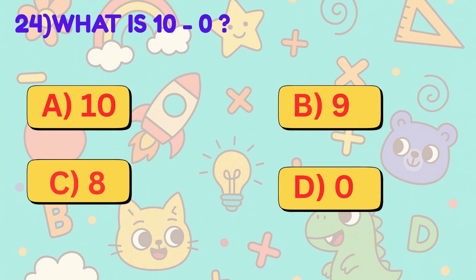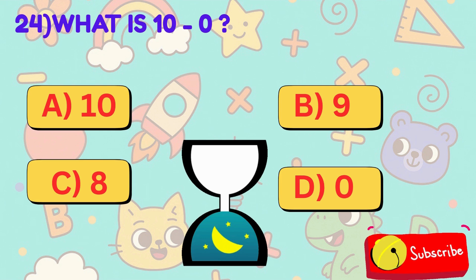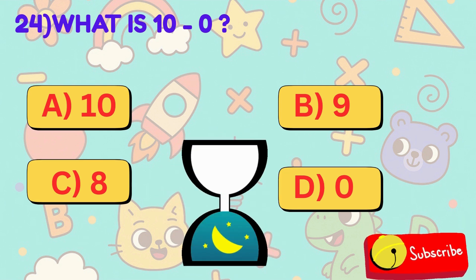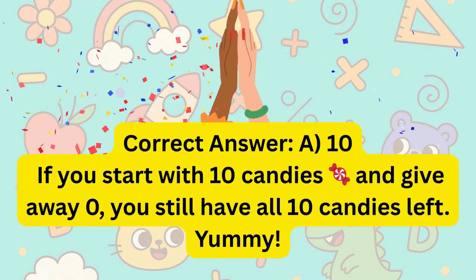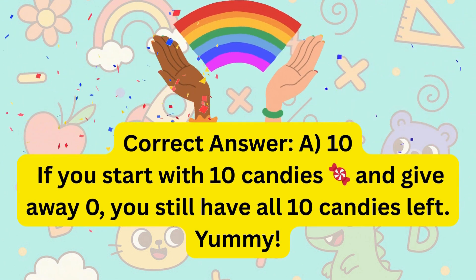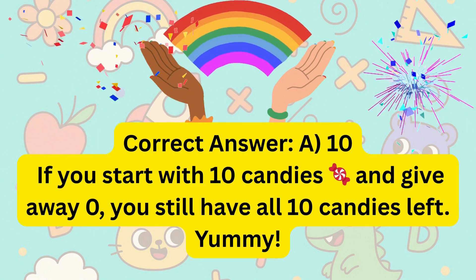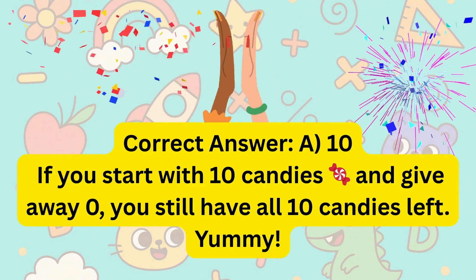24. What is 10 minus 0? Is it A, 10, B, 9, C, 8, or D, 0? Correct answer is A, 10. If you start with 10 candies and give away 0, you still have all 10 candies left. Yummy!